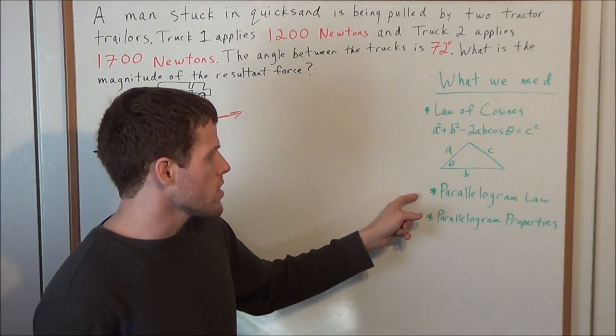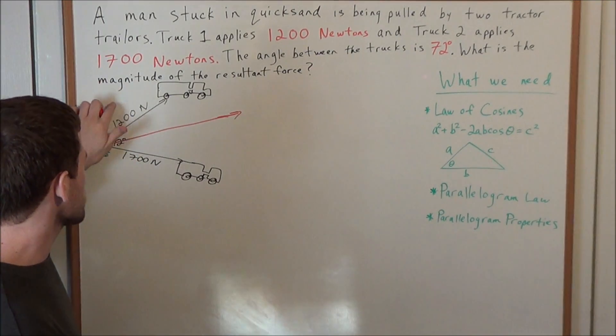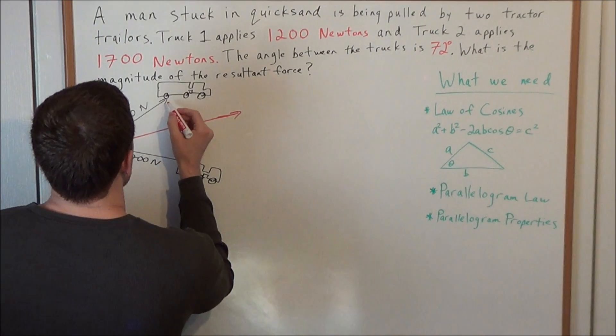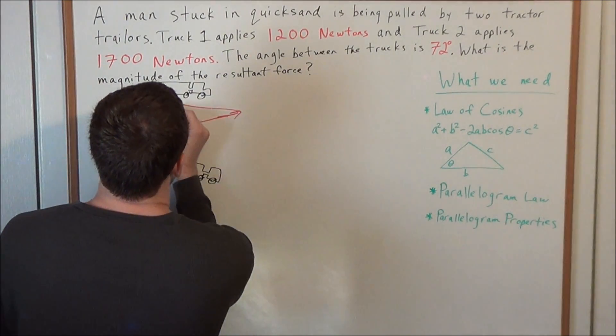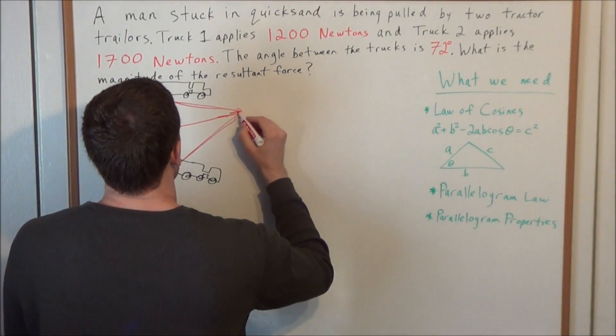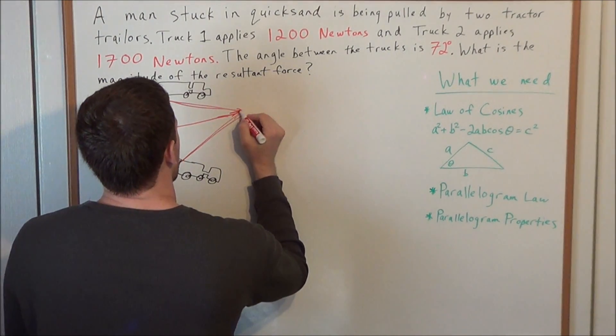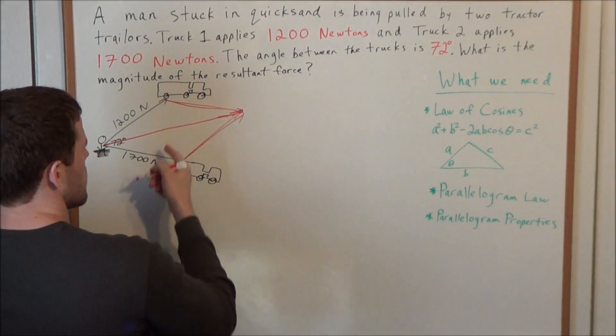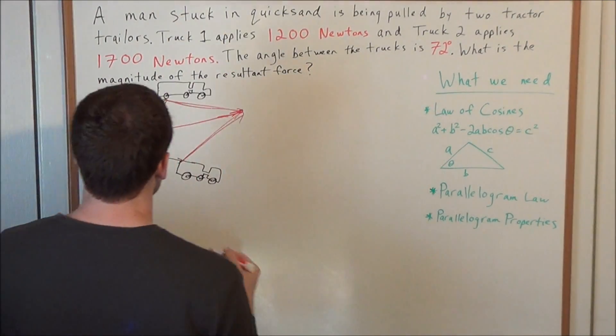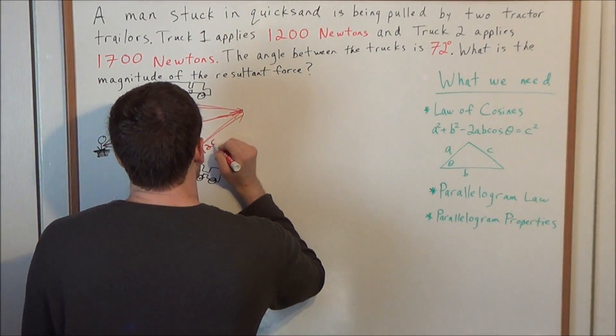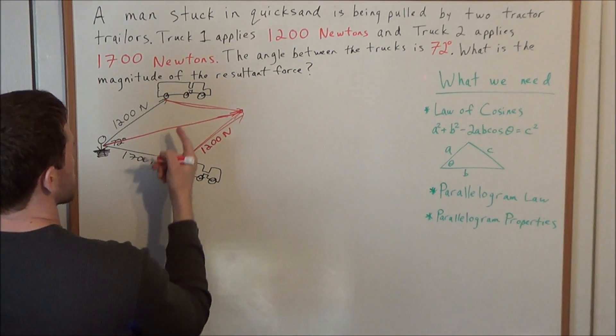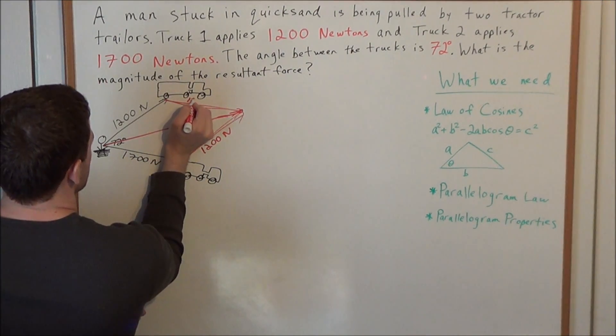Next, we're going to need the parallelogram law. This problem is really just a vector addition problem. The parallelogram law allows us to construct two additional vectors that will terminate at the same point of the resultant force. We know, using parallelogram properties, that this side here is going to be 1200 newtons, and that this vector here is going to be 1700 newtons.